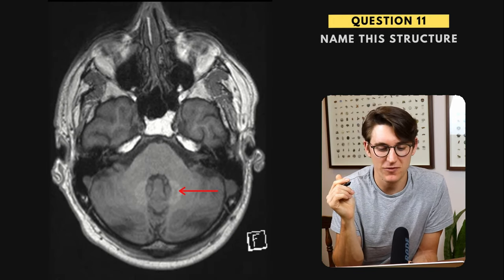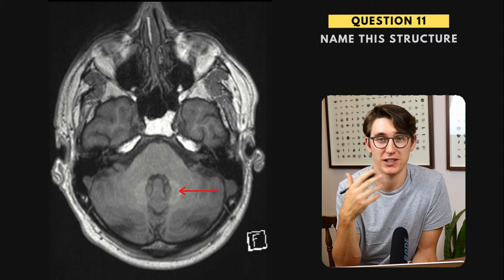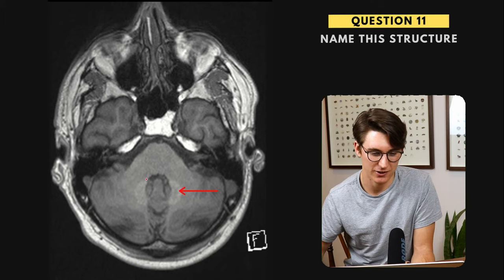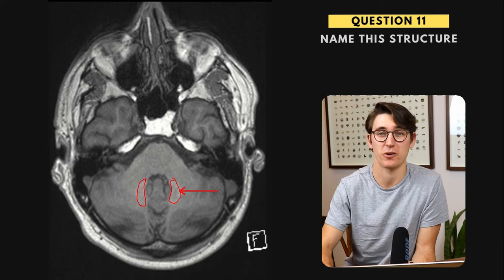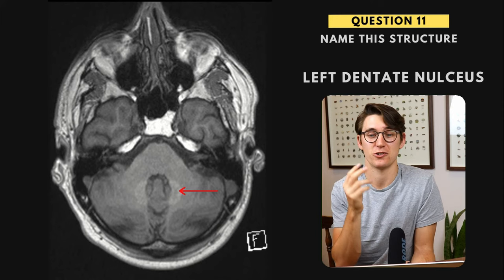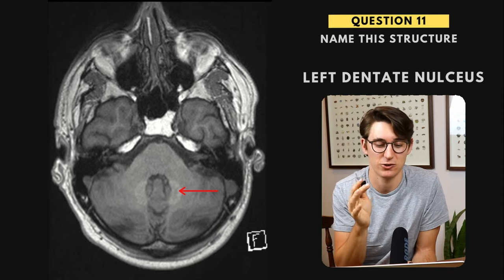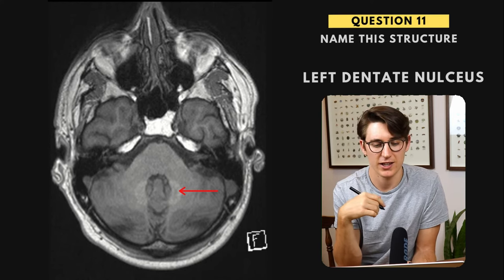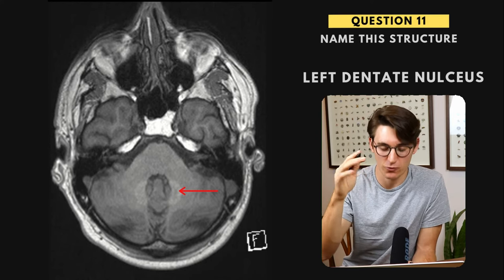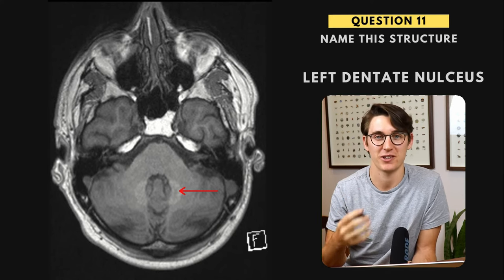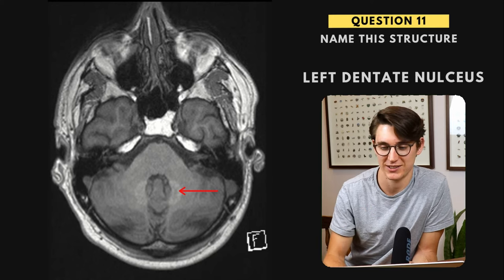Question eleven, we're asked to label this structure. This is an MRI where the patient has been given gadolinium, and it has highlighted these structures that people often forget — the cerebellum has nuclei. This is the largest nucleus in the cerebellum, and that's the dentate nucleus. It has fibers running between the dentate and the red bodies, forming the rubrodentate tracts. This is just a reminder that there are actually nuclei within the cerebellum, the largest of which is the dentate nucleus.